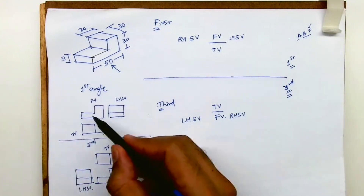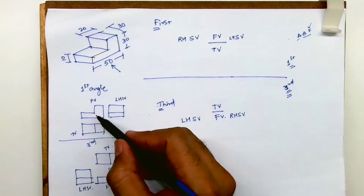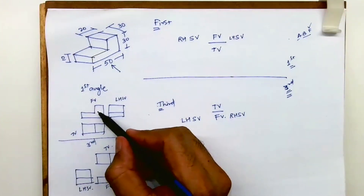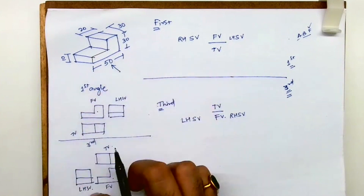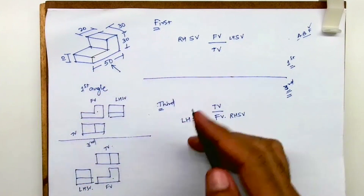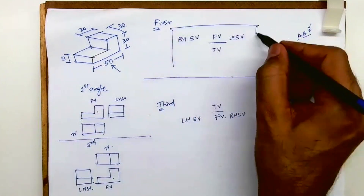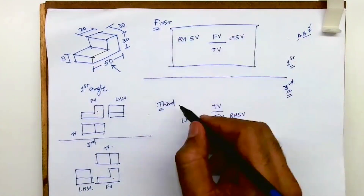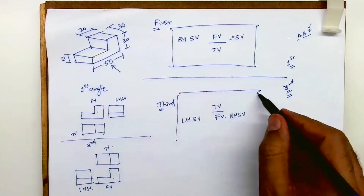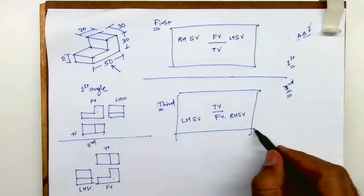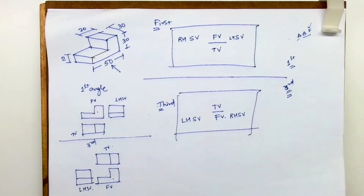This is the basic difference between first angle and third angle. The views remain the same — the front view in first angle and the front view in third angle are both the same — only the placement changes. You can remember it this way, and I hope this will help you a lot. I hope you've all understood this. Thank you.